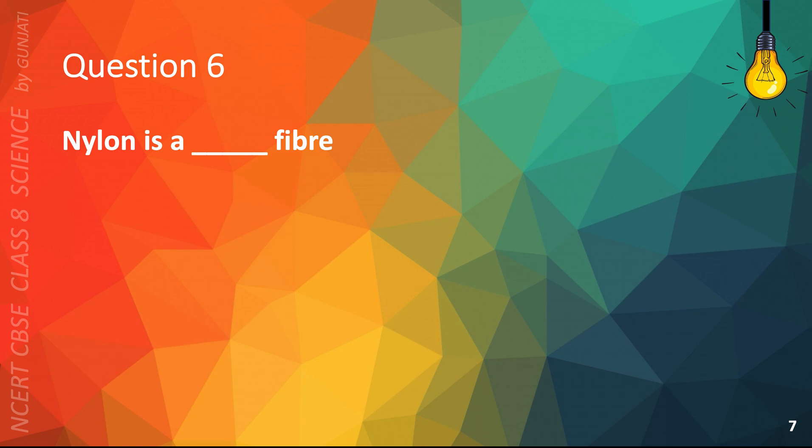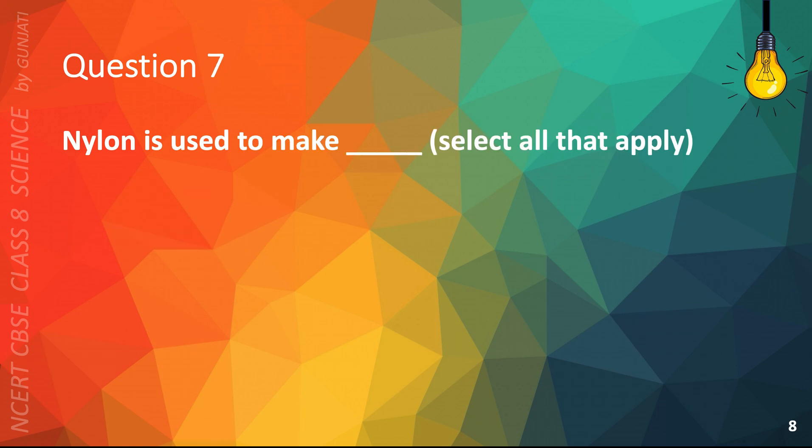Question 6. Nylon is a blank fiber. A. Natural, or B. Man-made. The correct answer is B. Man-made.